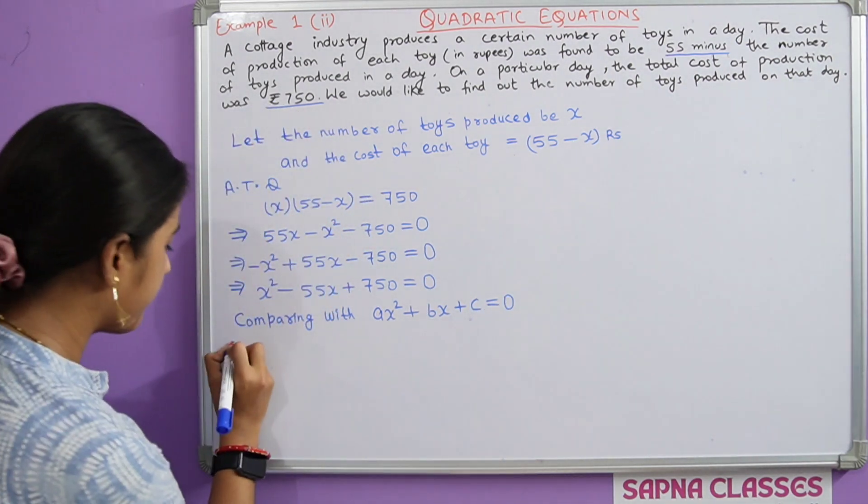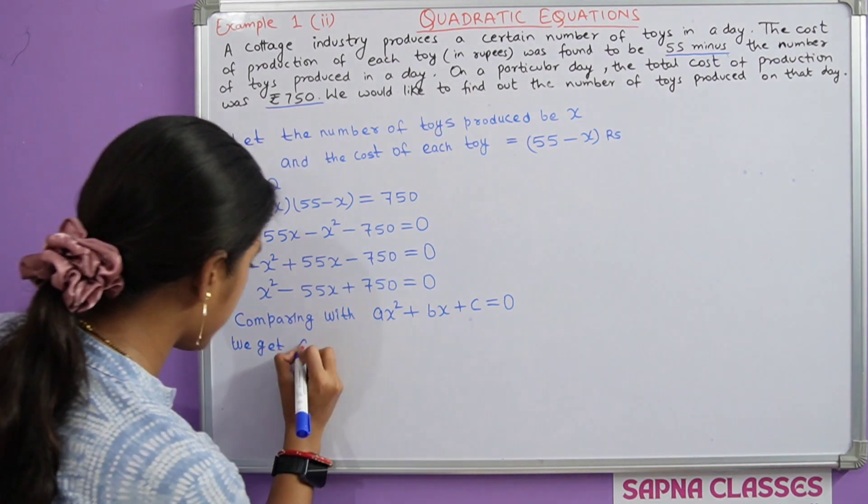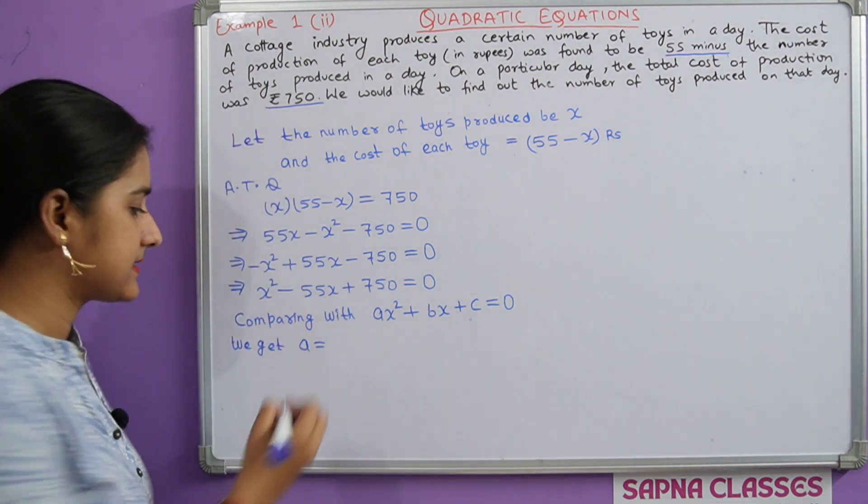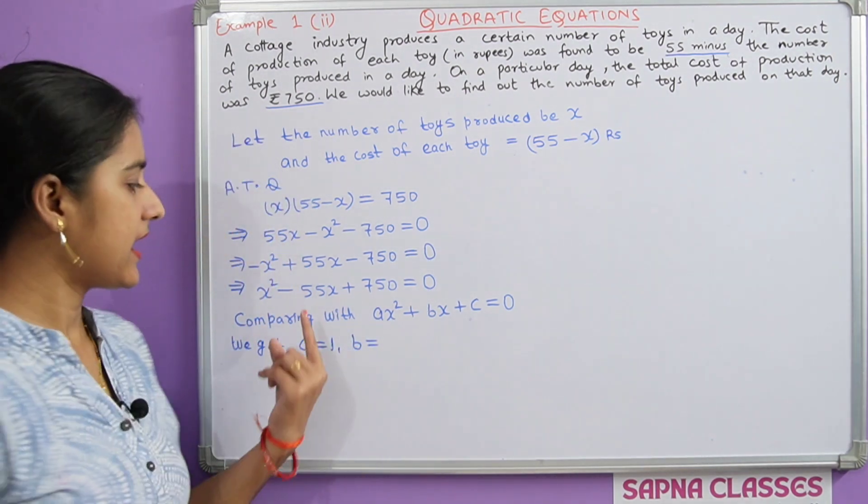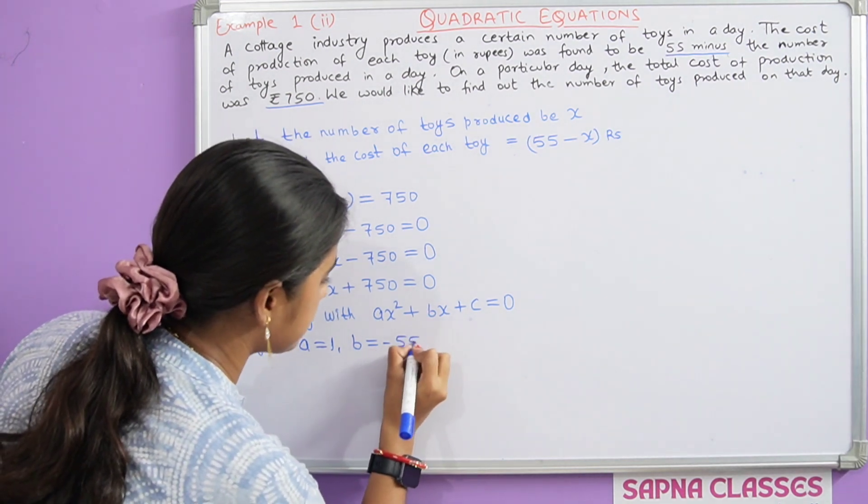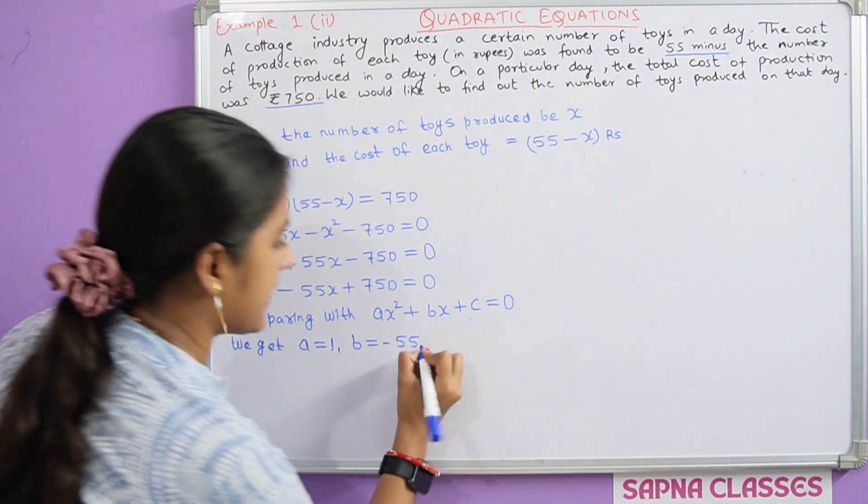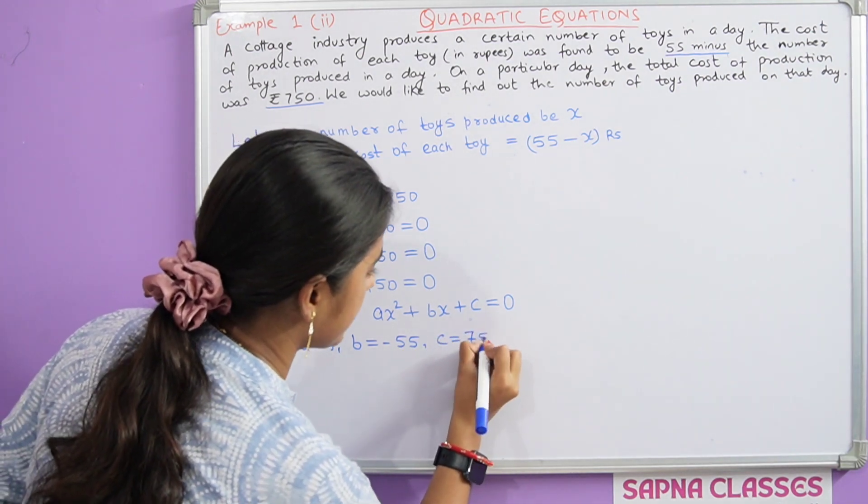After comparing, we get a equal to 1, and b equal to minus 55, and c equal to 750.